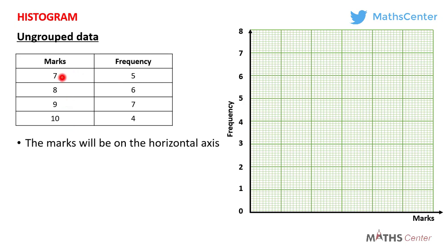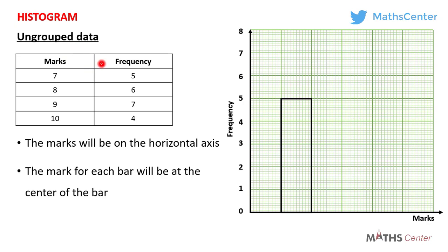We begin with the first bar for mark 7, which has a frequency of 5, so the height of the bar will be at 5. I have left a space at the beginning which I will explain later. An important note about a histogram for ungrouped data: the mark for each bar will be at the center of the bar. Since the bar occupies 10 minor divisions, the center is at the fifth division, and the mark 7 is placed there.